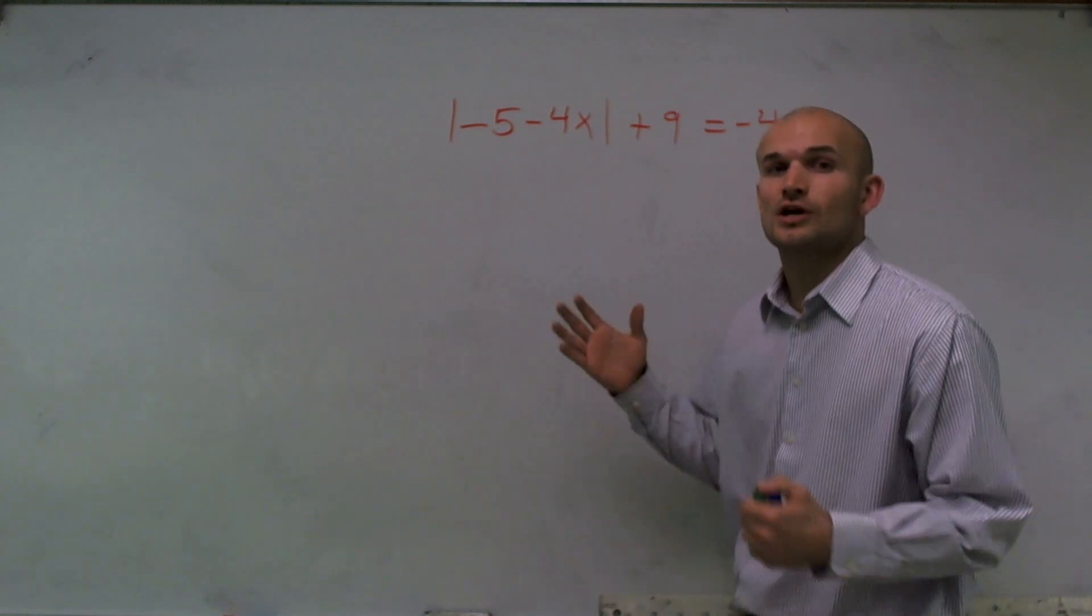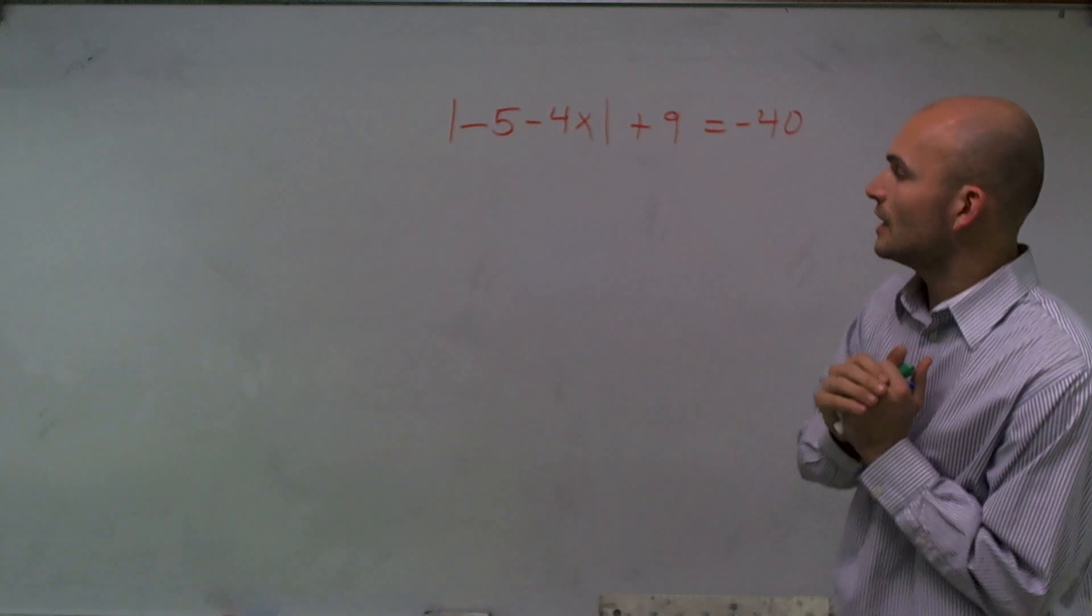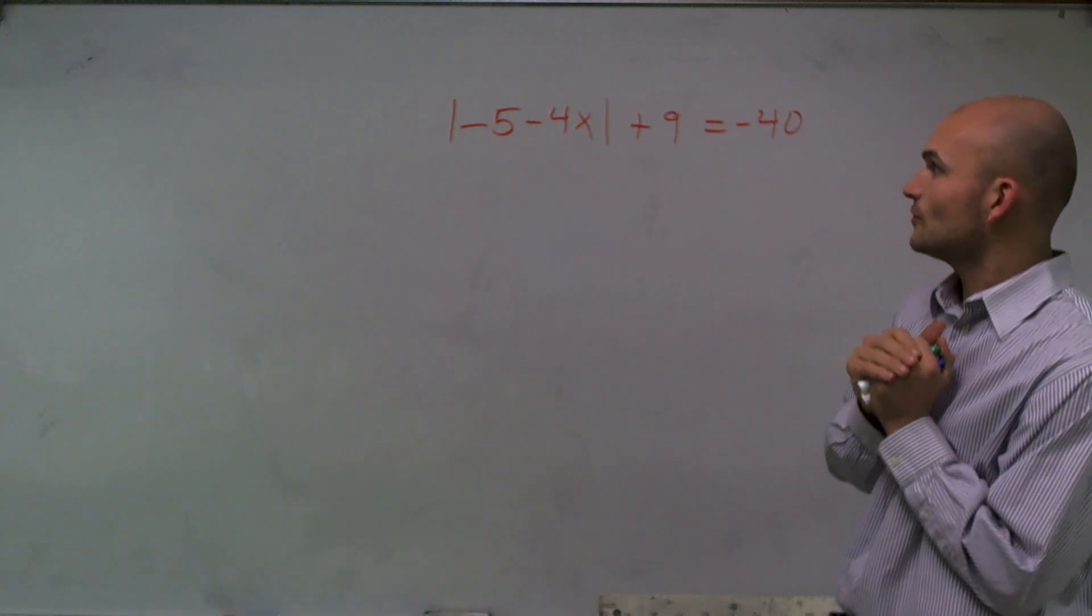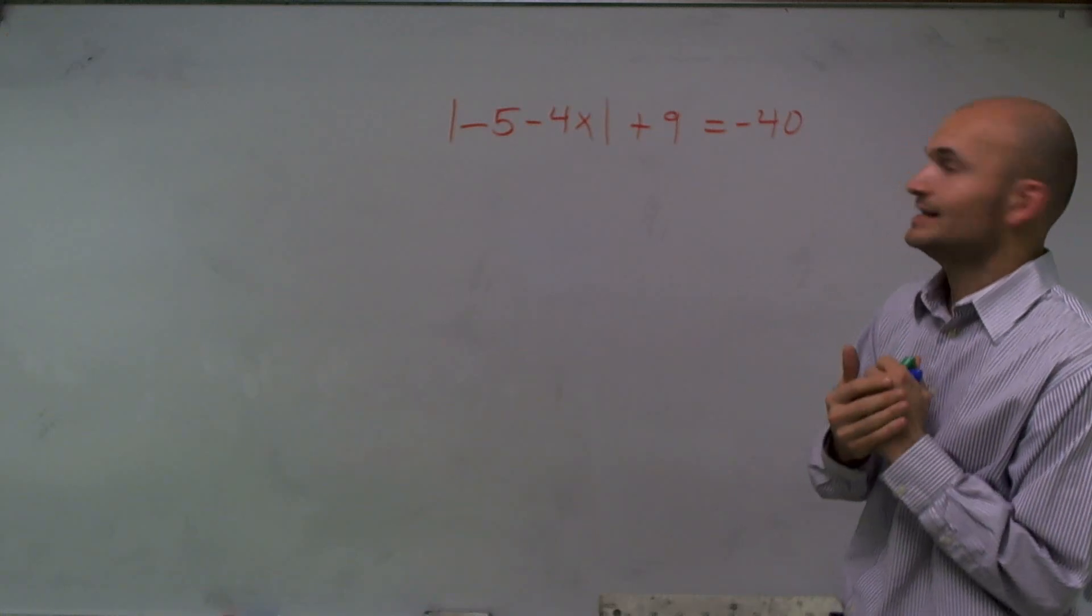OK, welcome. What I want to do is show you how to solve this absolute value equation: absolute value of negative 5 minus 4x plus 9 equals negative 40.